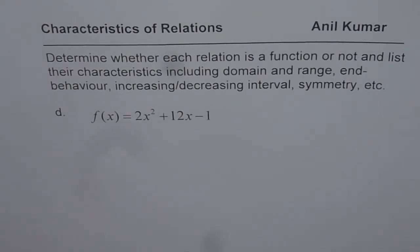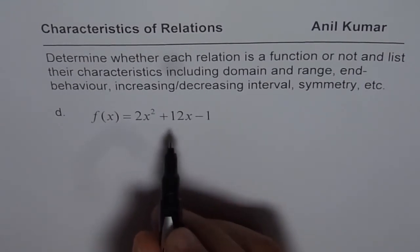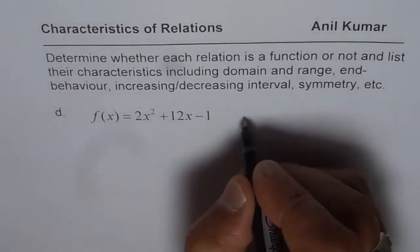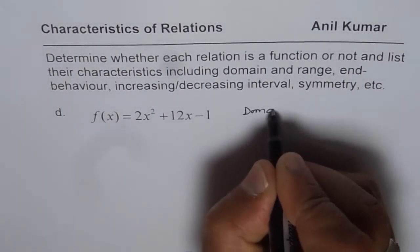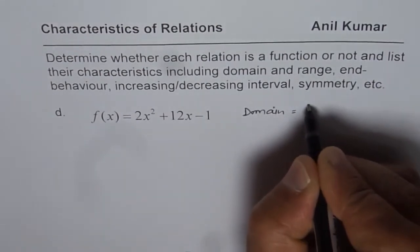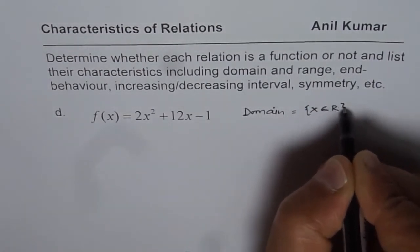Now, it is a function since for any value of x we'll have only unique values of f(x). Now, how to find domain and range? As far as domain is concerned, it is clear domain is all real numbers. So we know domain is x belongs to real numbers.